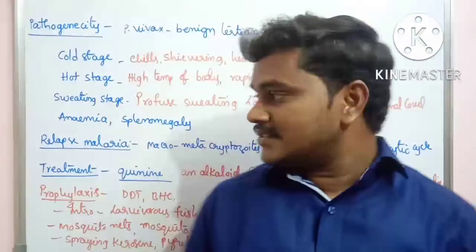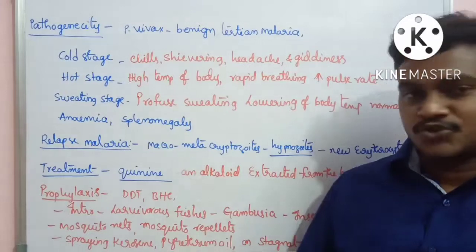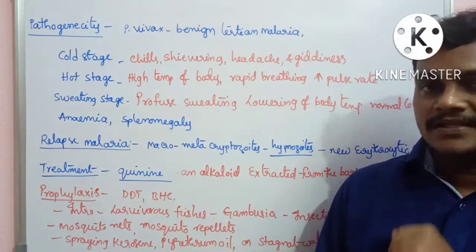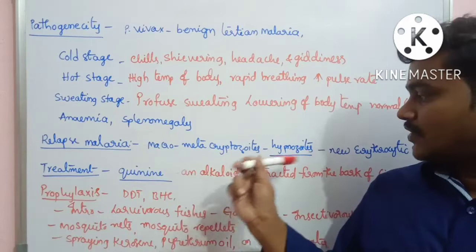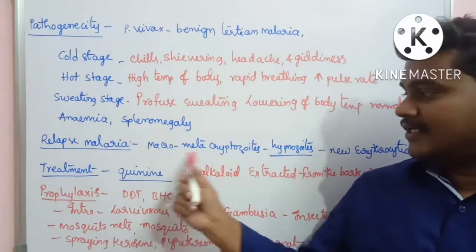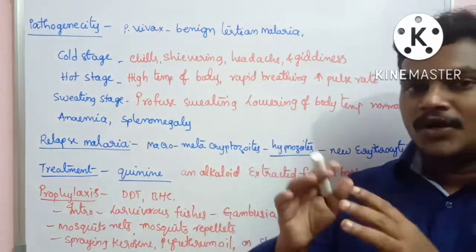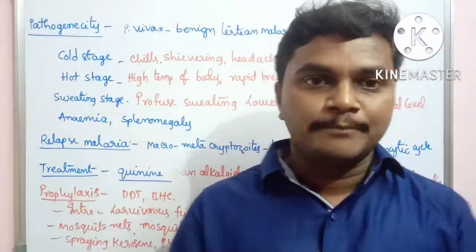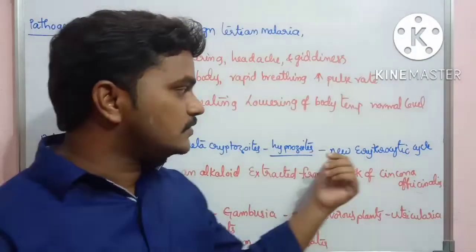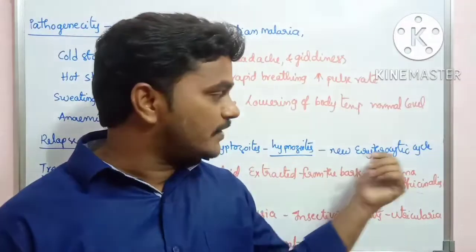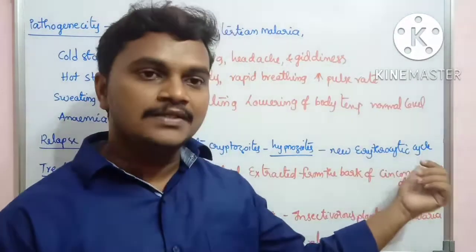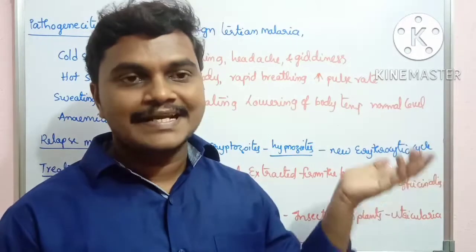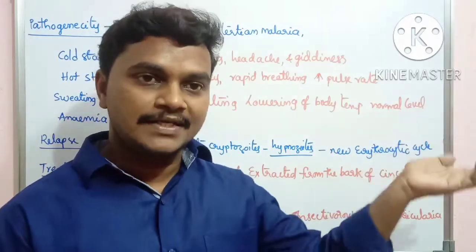Some metacryptozoites are present in the dormant stage in the liver. They are also called hypnozoites. These metacryptozoites in their dormant liver stage can restart a new erythrocytic cycle, leading to the formation of malaria again. This is called a relapse.